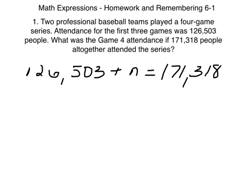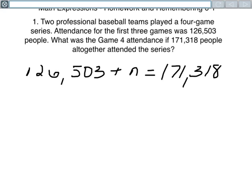So it's important to realize that we have an equation right now with a variable n, and there's always an equal sign in the equation. Our equal sign's here, 126,503 plus some number is going to equal 171,318.